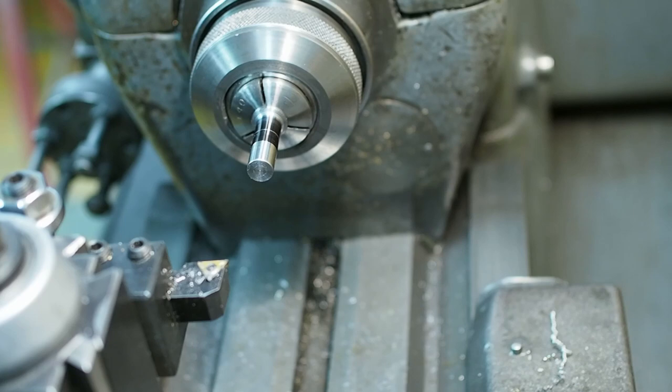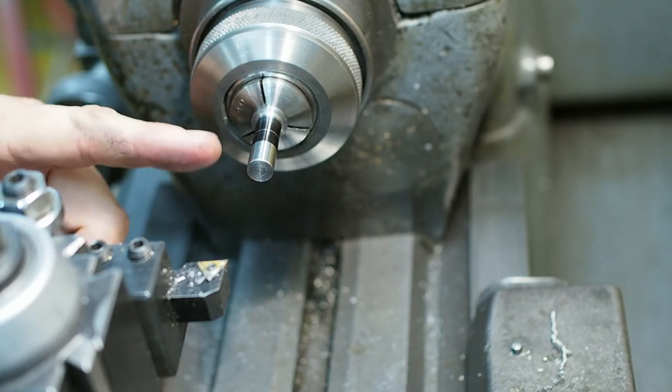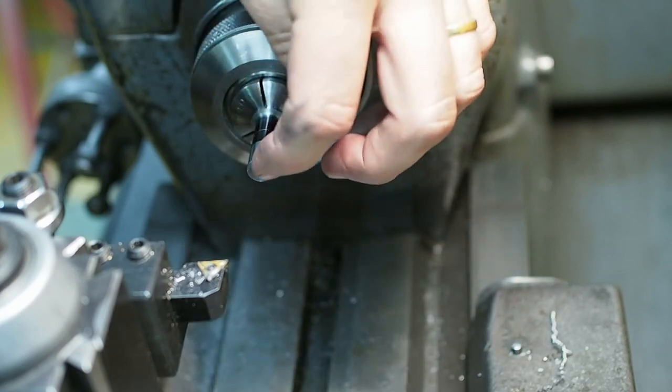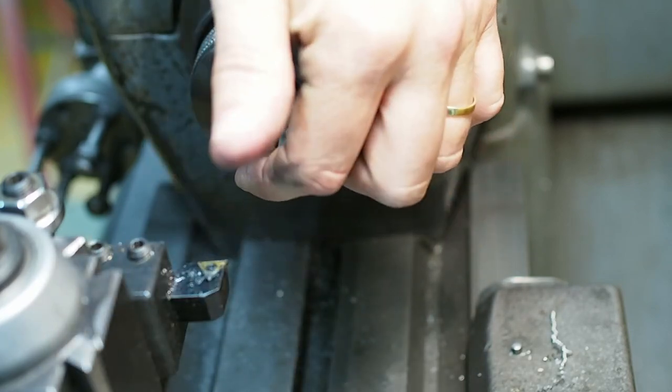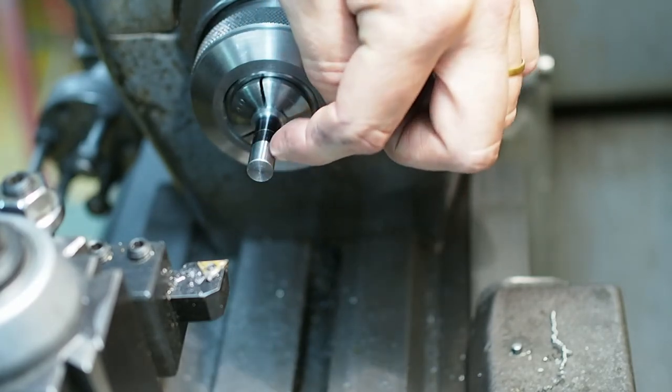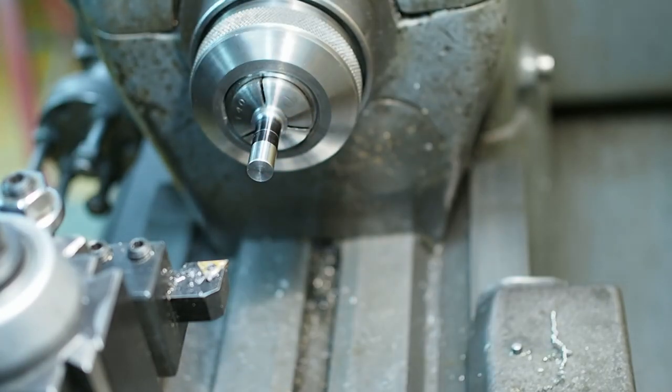Next up we need to turn the threaded portion down to 4mm. Now I'm not going to do that in one go because if I go all the way 18mm by 4mm diameter on a support without any support that would be possibly too flexible. So what I'll do is I'll take it down in two parts.